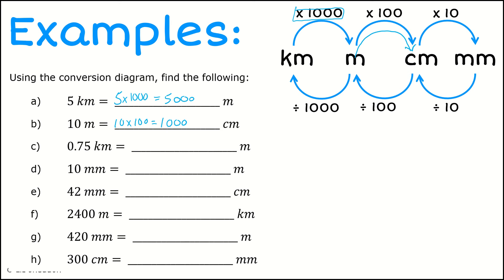The next one, I want to go from kilometers to meters again. We want to multiply by a thousand, so 0.75 times 1,000 is going to give me 750 meters.